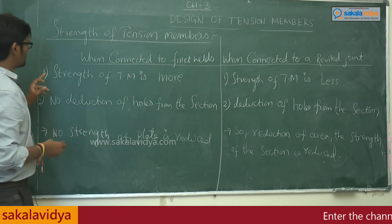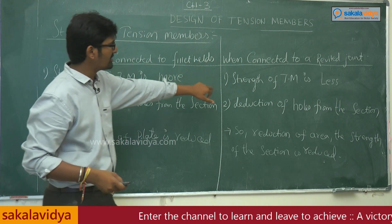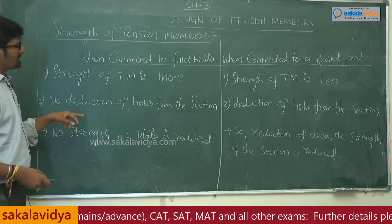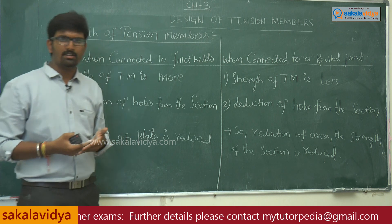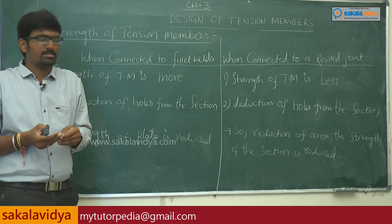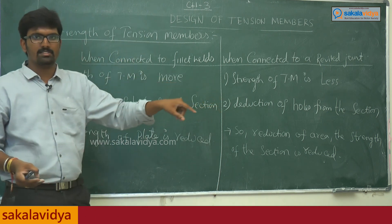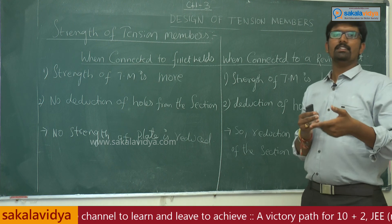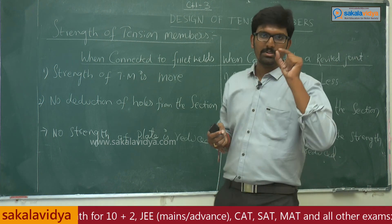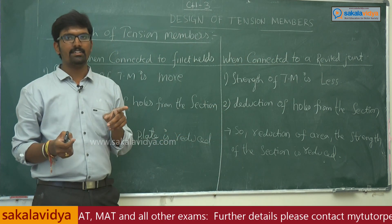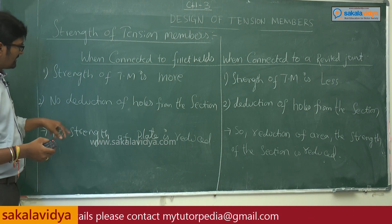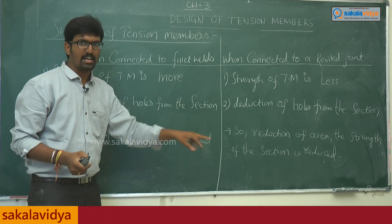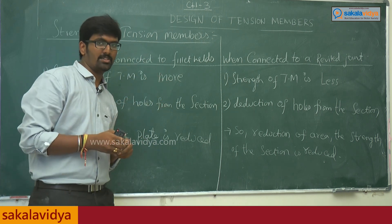The strength of tension members is more in fillet welds, whereas the strength is less when connected to a riveted joint. In fillet welds, there is no deduction of holes from the section — welding is done directly. In riveted or bolted joints, holes must be deducted from both plates in order to place the bolts or rivets. Because of this reduction in area, the strength of tension members connected to rivet joints is reduced.